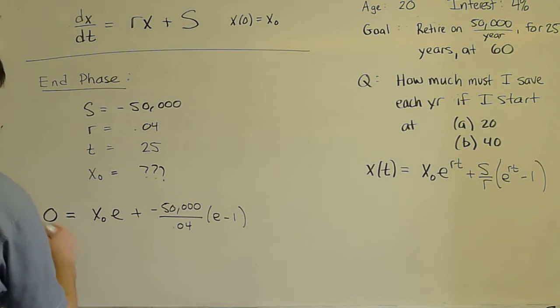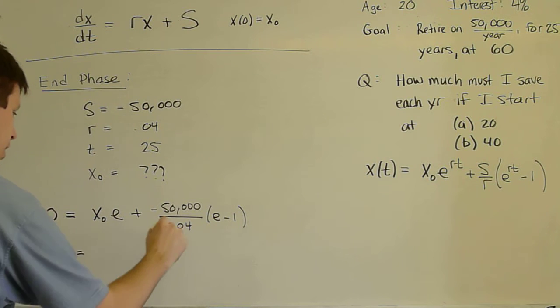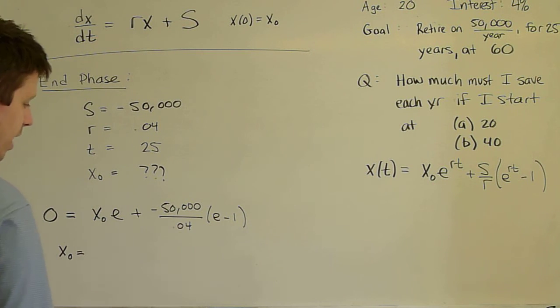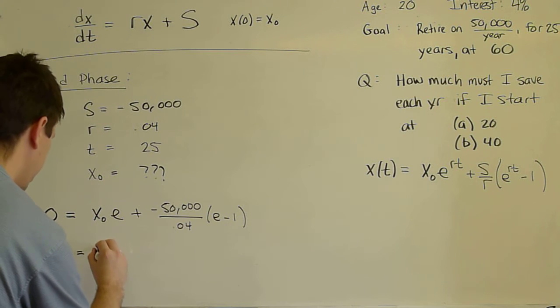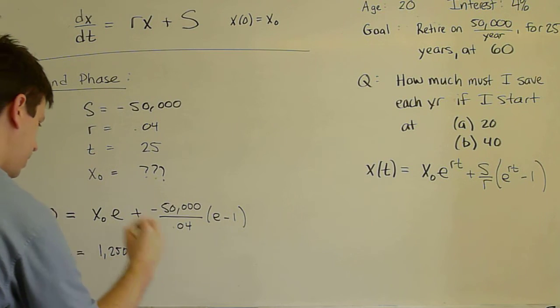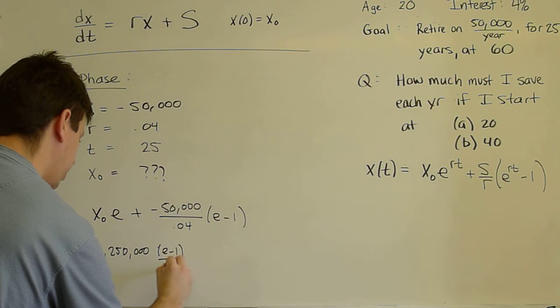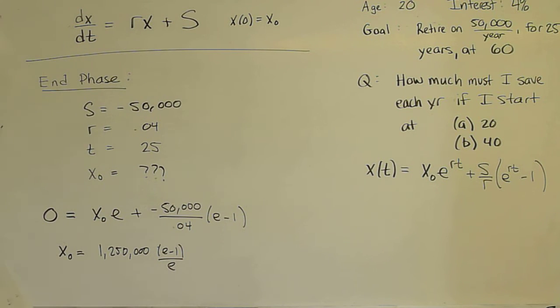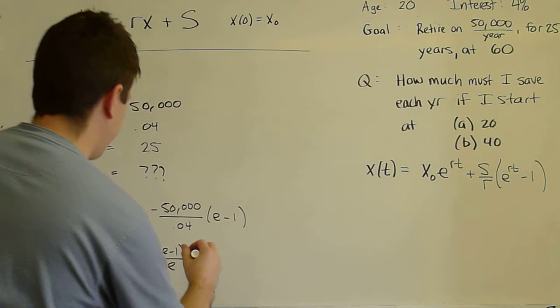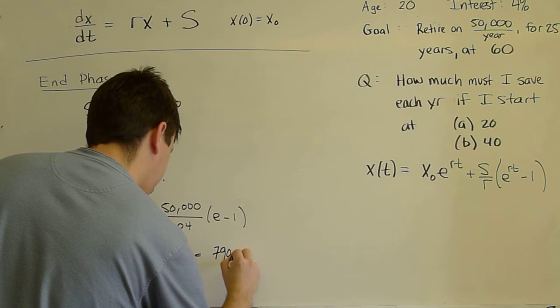We pull this negative over to the other side. We divide both sides by e. X₀ = 50,000 divided by 0.04. That's the same as times 25. So that's 1.25 million times (e - 1)/e. And at this point, we must plug into our calculator.